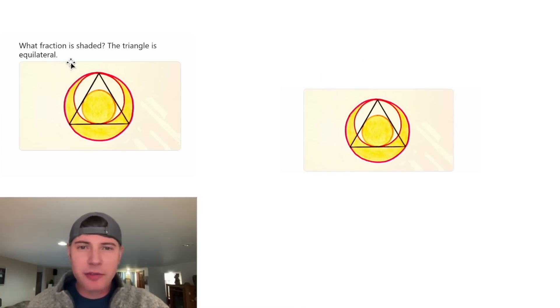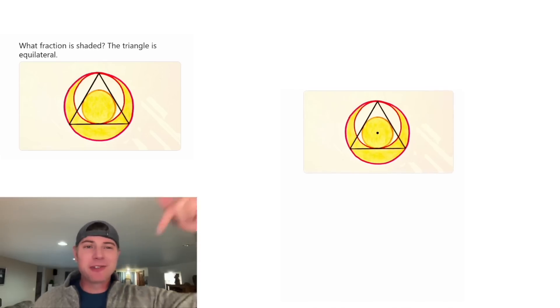The question is asking what fraction is shaded, and it tells us the triangle is equilateral. I'm also making another assumption that's not explicitly stated, that this circle is concentric with this circle. That means this is the center of both the smallest circle and the largest circle. The other circle has a different center somewhere else. If you want to try it on your own, pause it right now.